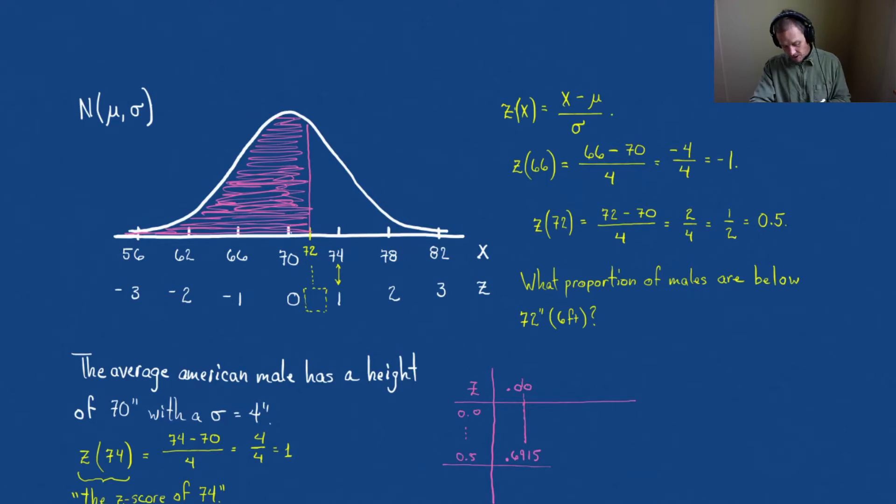And so we could write our answer is then the probability that x is less than 72, we would say is 0.6915.